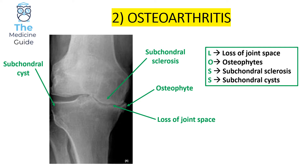This is an example of osteoarthritis, and the mnemonic I use is LOSS: Loss of joint space, Osteophytes, Subchondral sclerosis, and Subchondral cysts. Beginning at the top and working clockwise: the first thing is the presence of subchondral sclerosis — you can see thickening and areas of greater white intensity on the knee x-ray. Then we have osteophytes, represented by an irregular bony outgrowth. After that, there is loss of joint space.